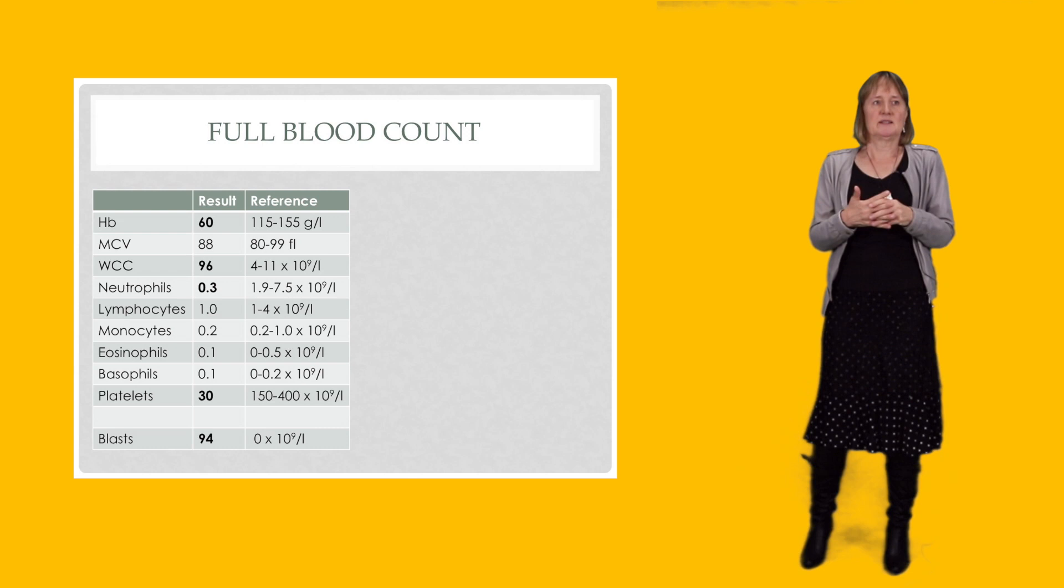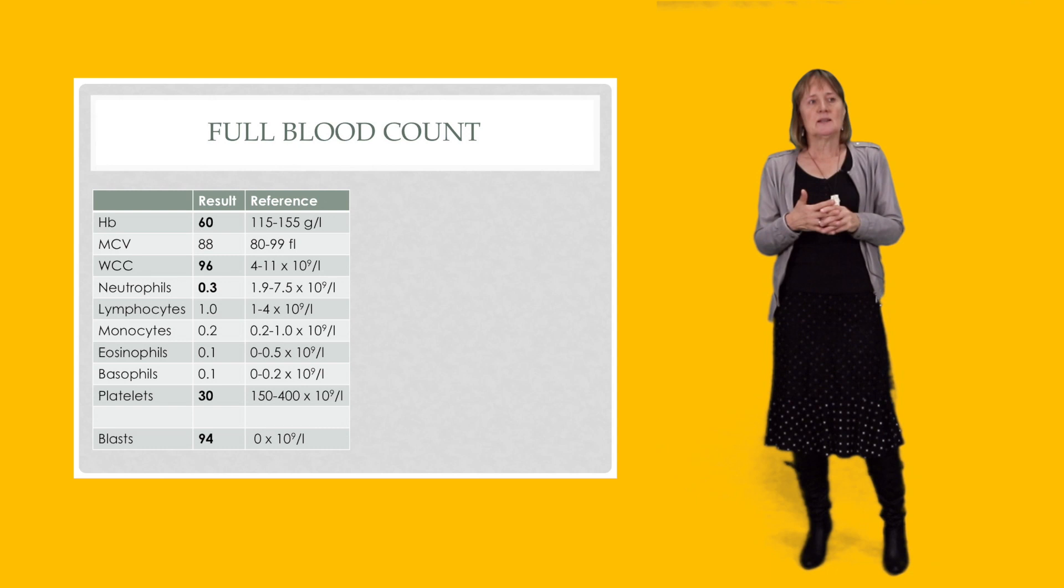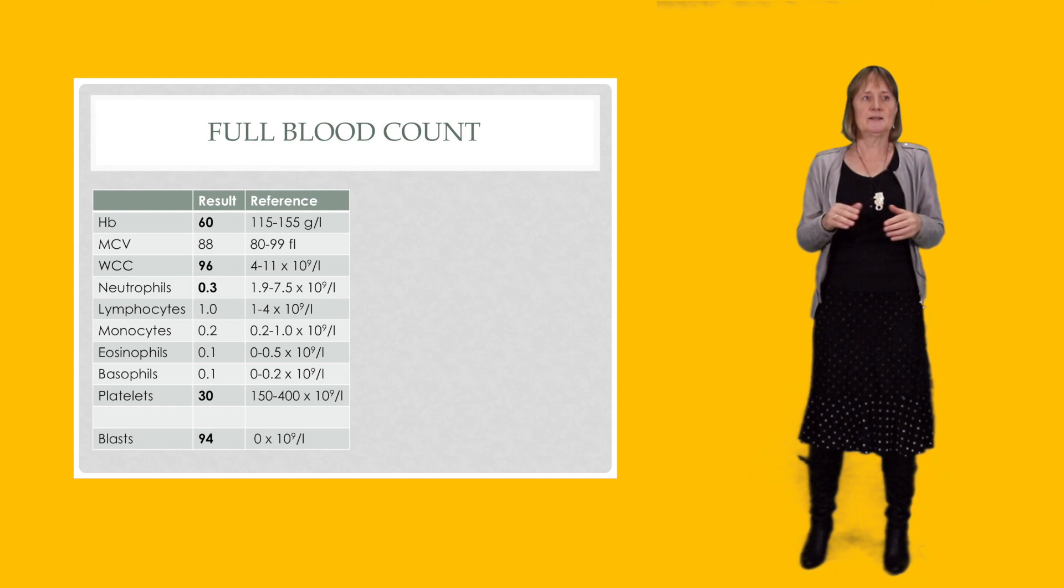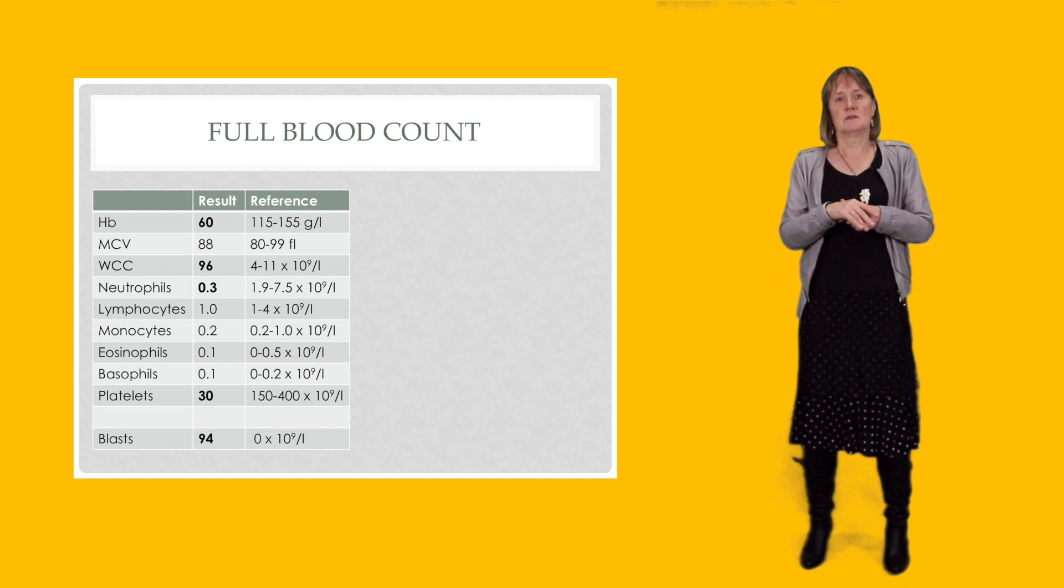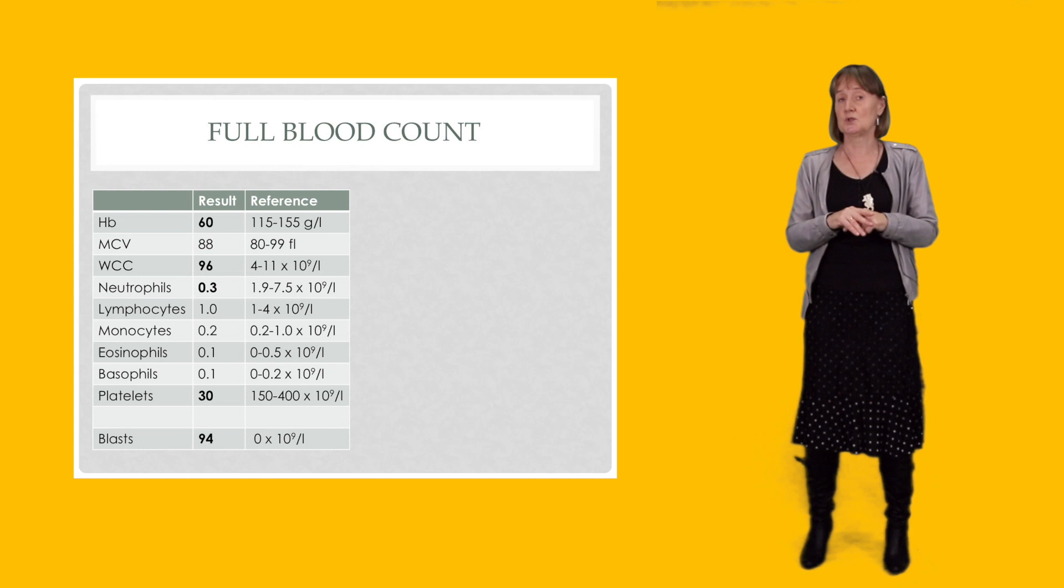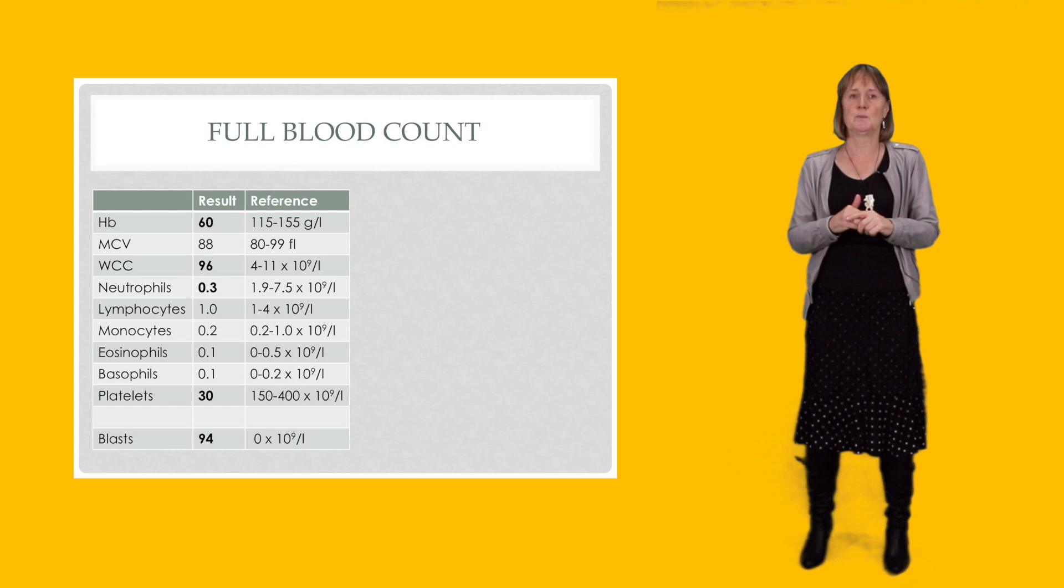And different conditions will present differently, but here is one just as an example. So here we have a patient who has a low hemoglobin, they have a low neutrophil count, they've got a low platelet count, so they've got evidence of pancytopenia. But they do also have a very high white cell count, and on the bottom here there are some cells in the peripheral blood that should not be there.